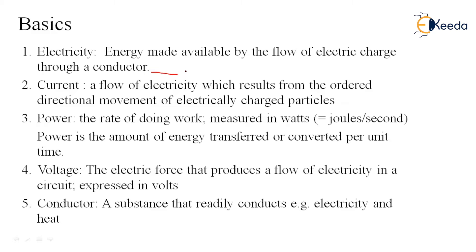When electrically charged particles flow in a specific direction, it is called current. Power is the rate of doing work, measured in watts, that is joules per second. It is the amount of energy transferred or converted per unit time. Voltage is the electric force that produces a flow of electricity in the circuit — the force that drives electricity from one point to another.